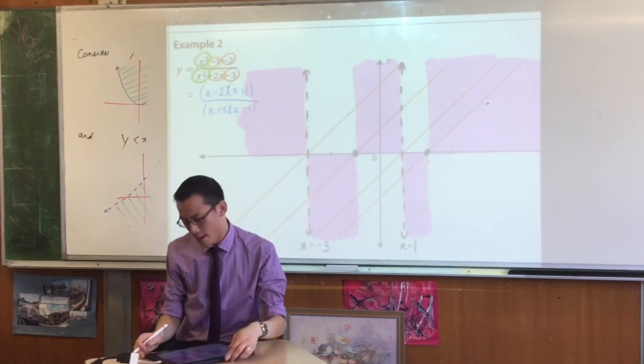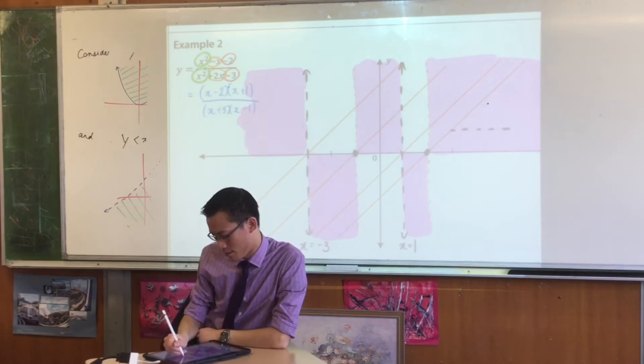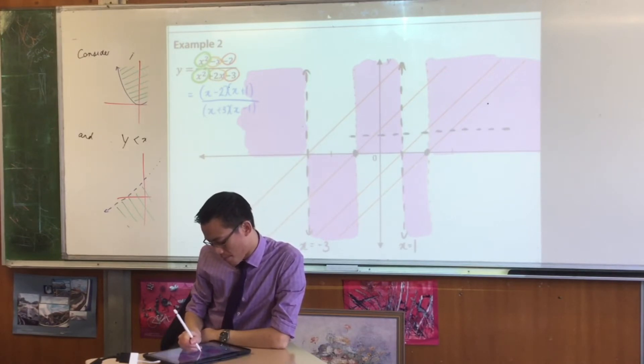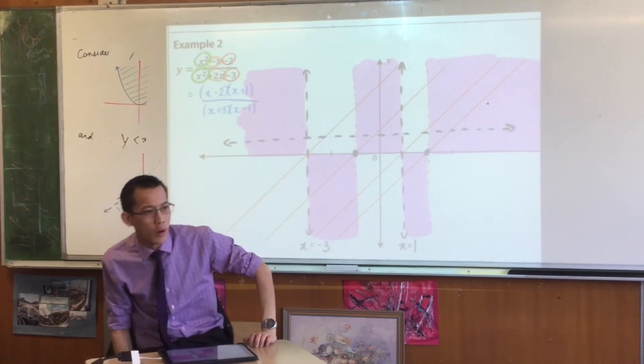Now while I draw that in, I want you to notice this weird interaction between the horizontal asymptote and the regions. What did the regions tell you? What are the regions about?